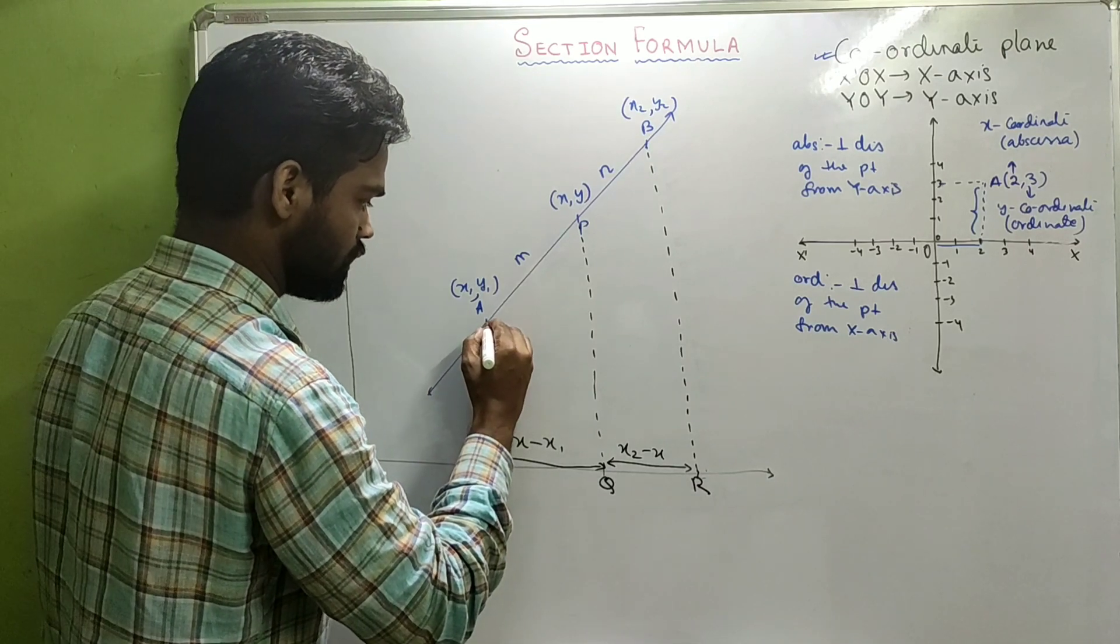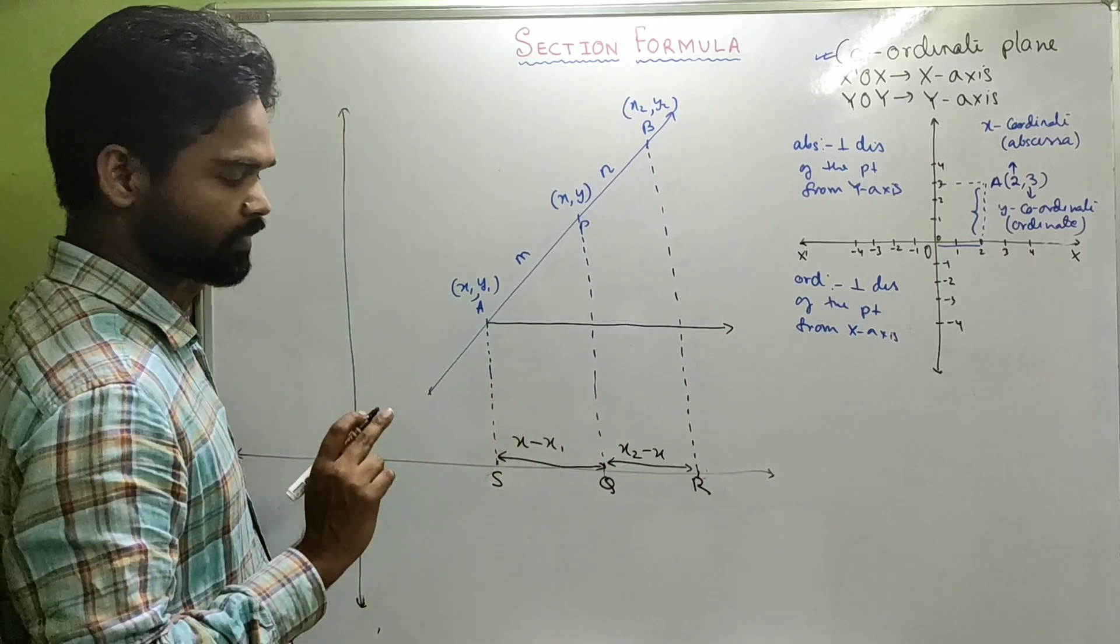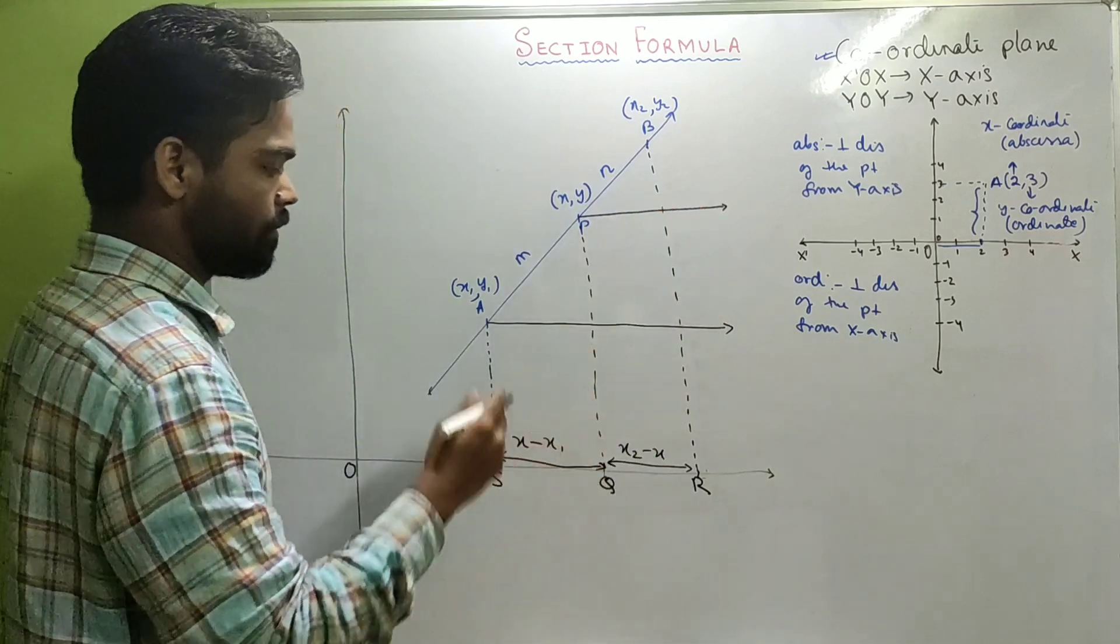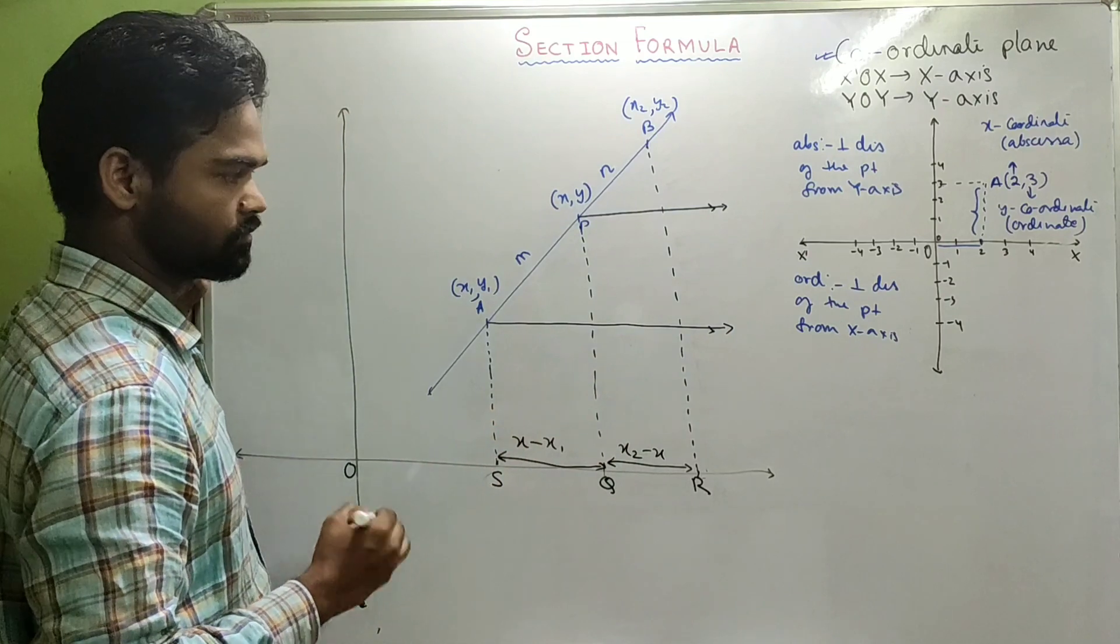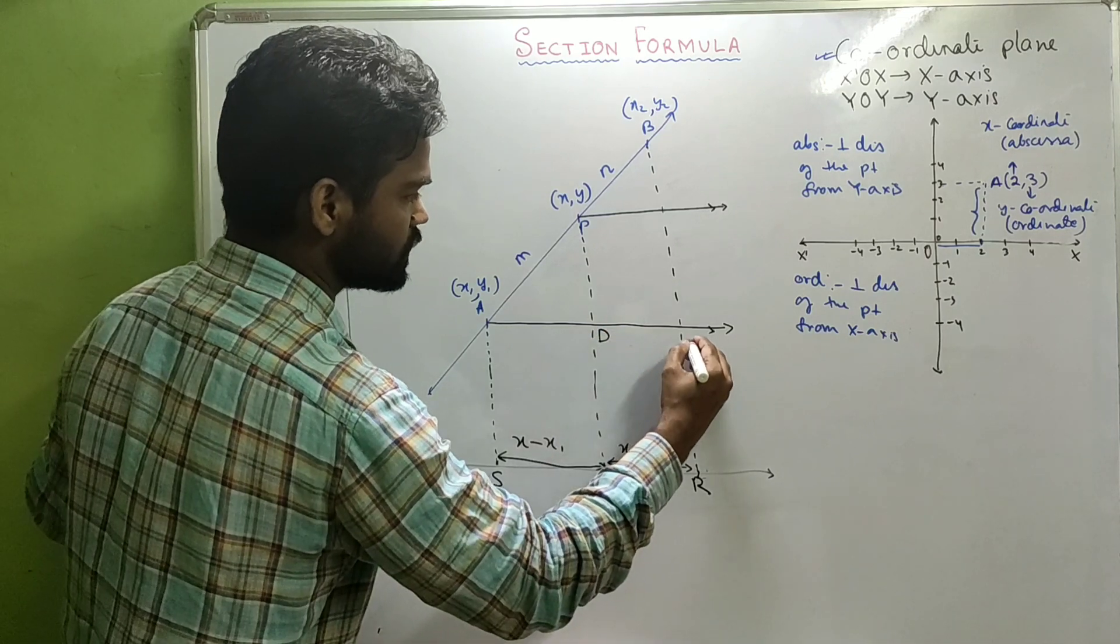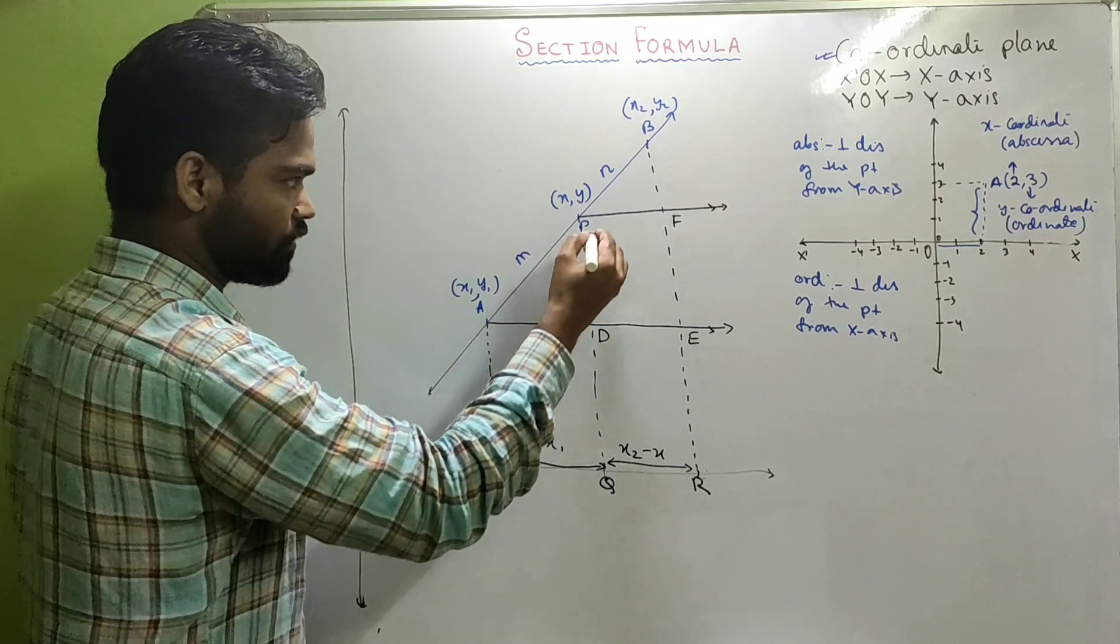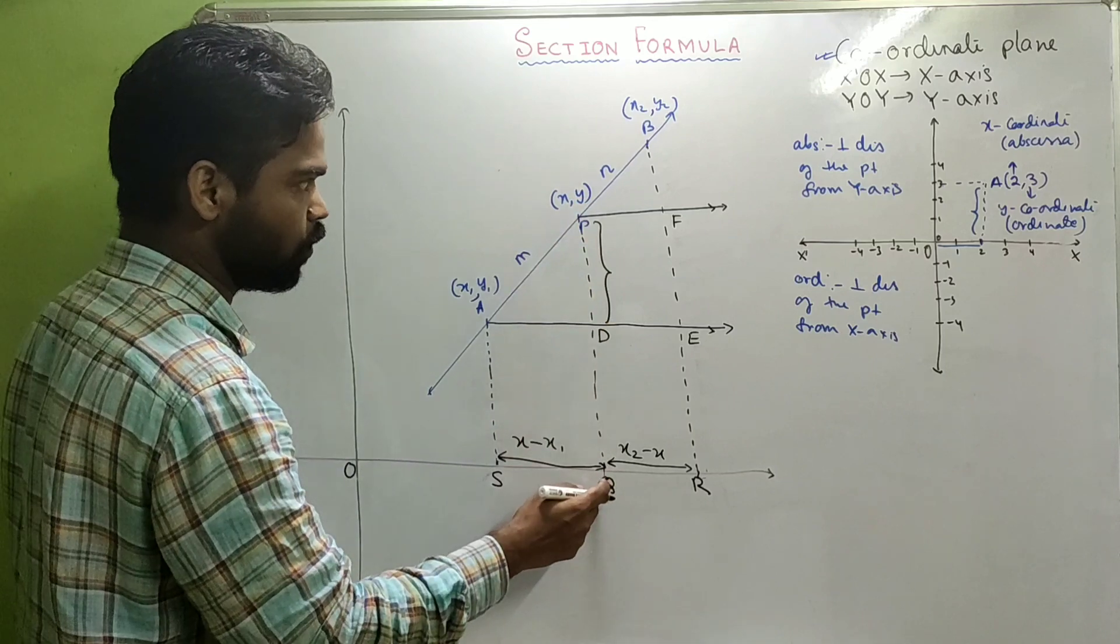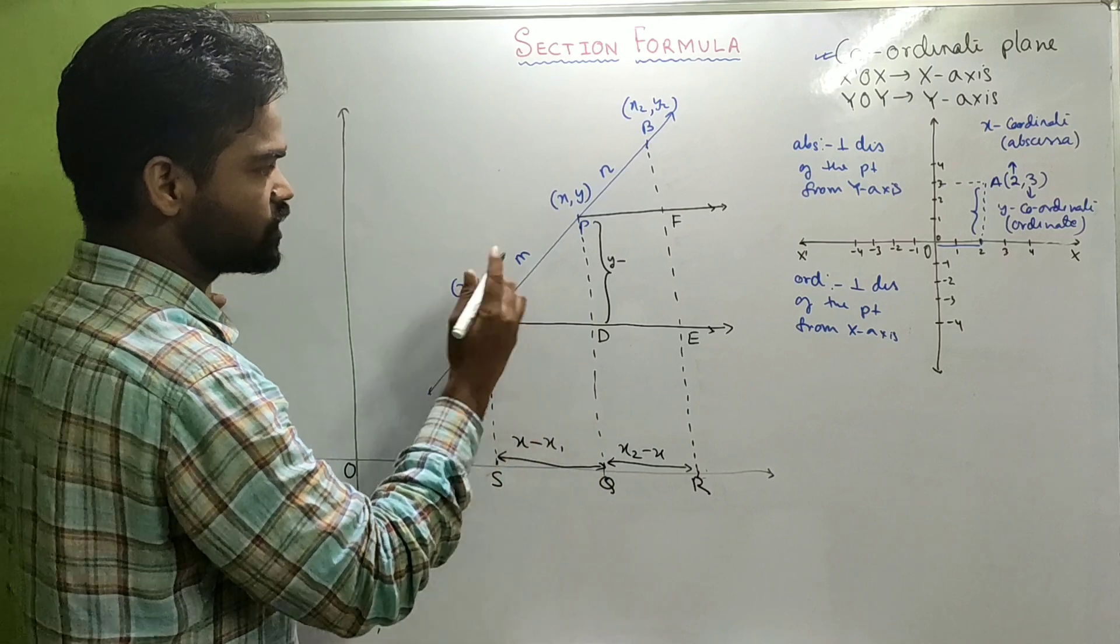Now, through A, I'll draw a line parallel to X-axis and through P also, I'll draw a line parallel to X-axis, which means these two lines are also parallel to each other. Suppose I take this as D and this as E, this as F. Now look carefully. PD: when you talk about PD, PD is PQ, that is Y, minus DQ, which is Y1.